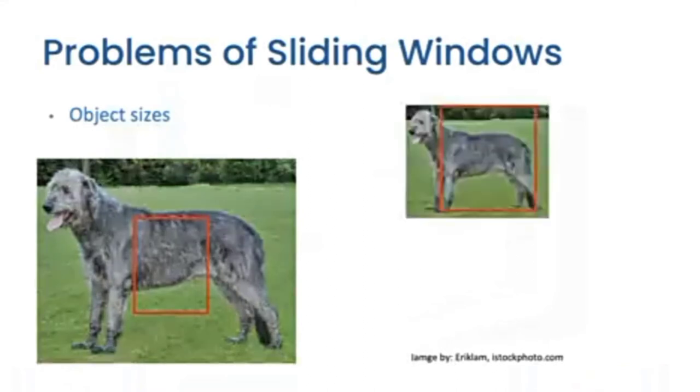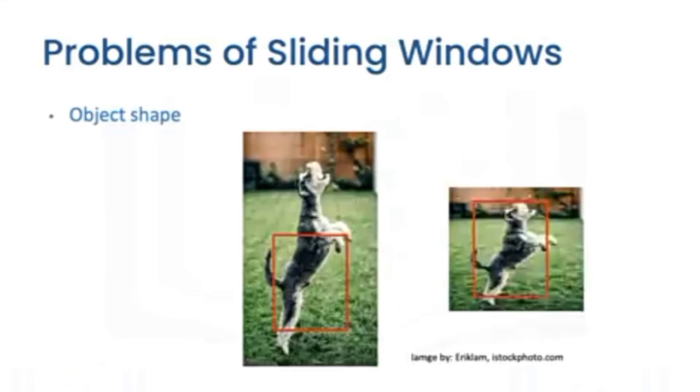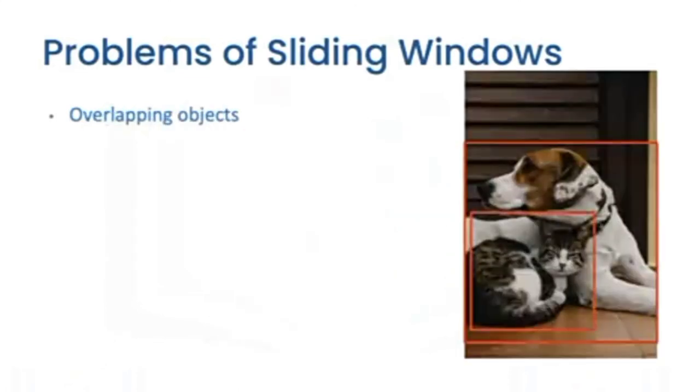One way to solve this is to reshape the image. The same object can have different shapes. Again, reshaping or resizing the image is one solution. We also have the problem of overlapping objects in pictures, so as such, this may pose issues to the sliding windows.